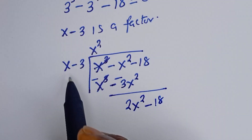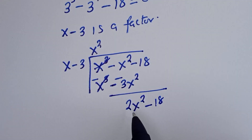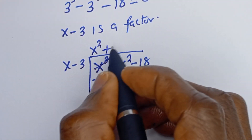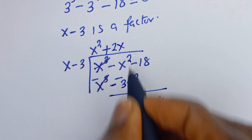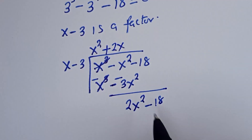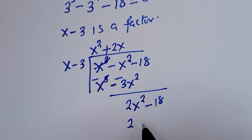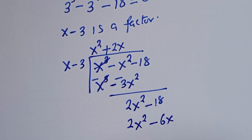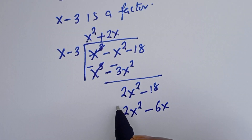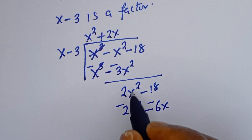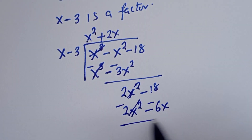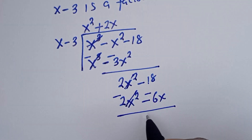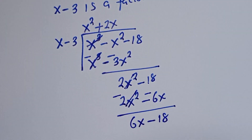Now, s goes into 2s squared giving 2s. 2s times s is 2s squared, and 2s times minus 3 is minus 6s. Multiply by minus 1 to subtract: 2s squared cancels. Then we have 6s minus 18.